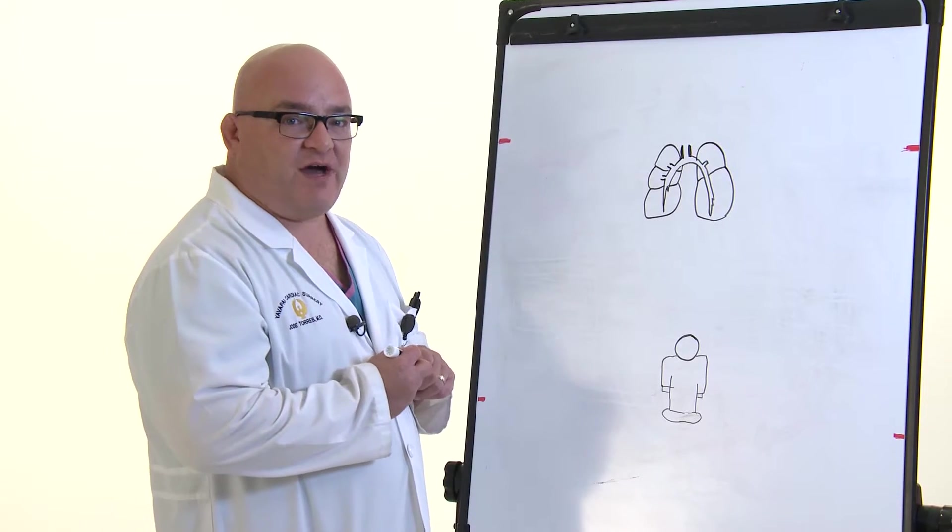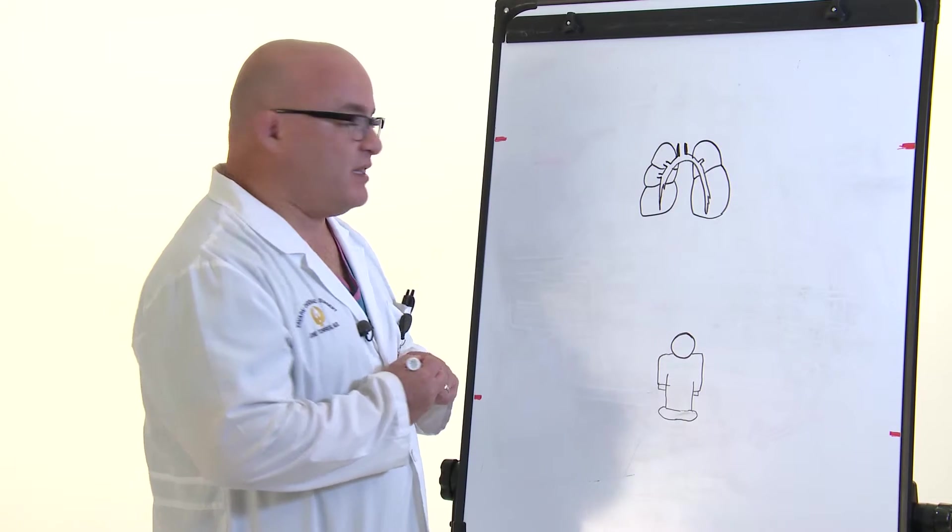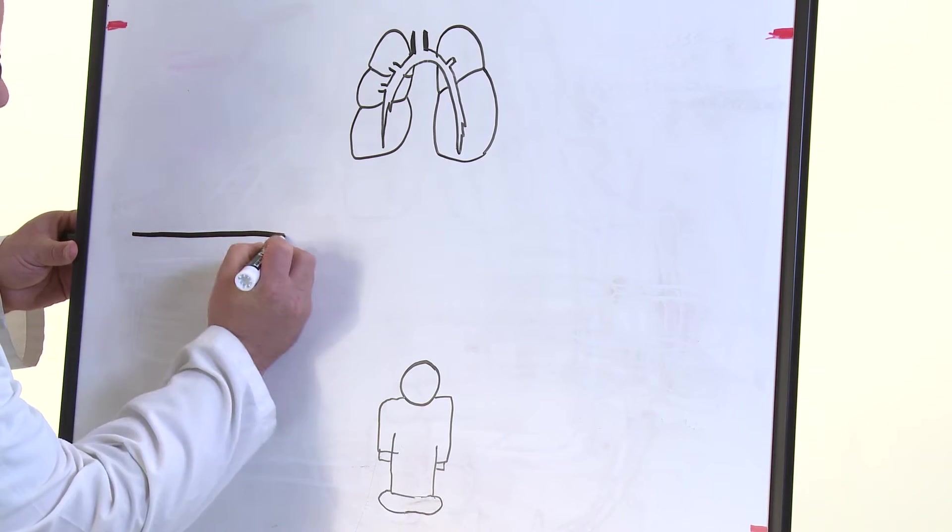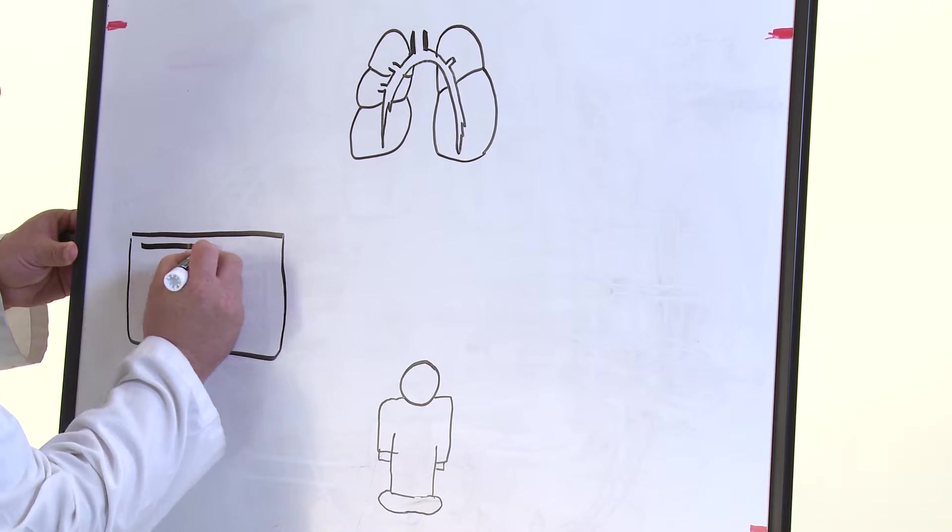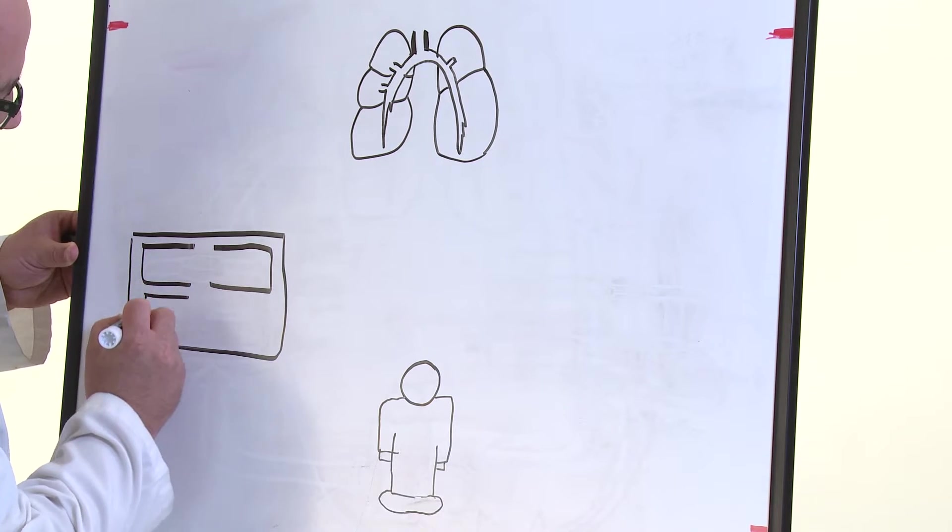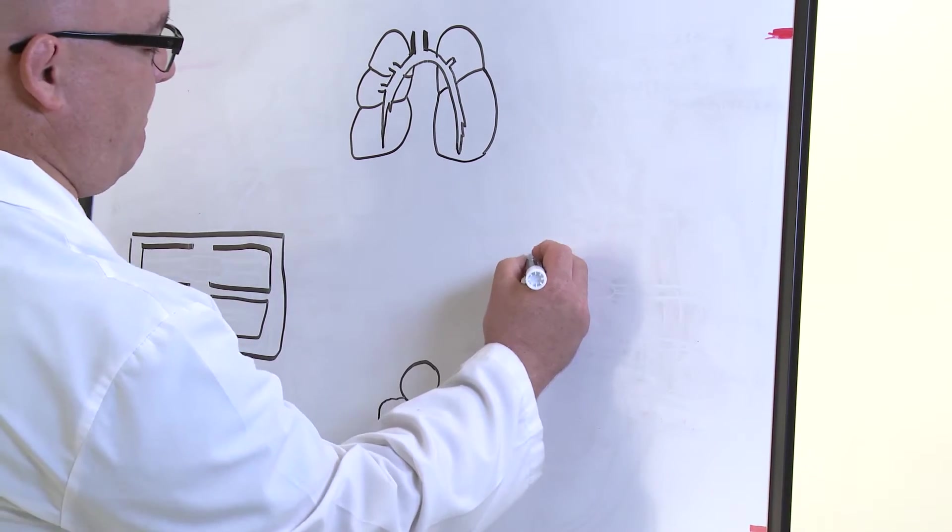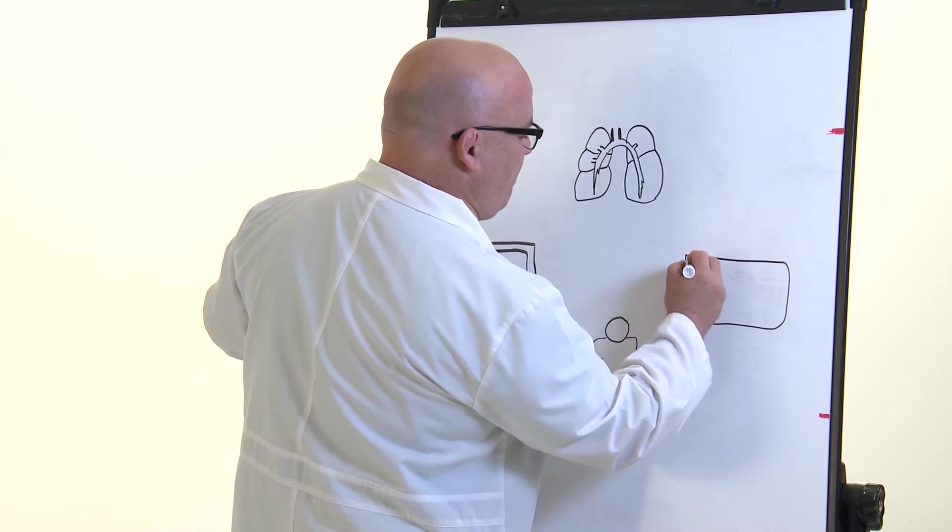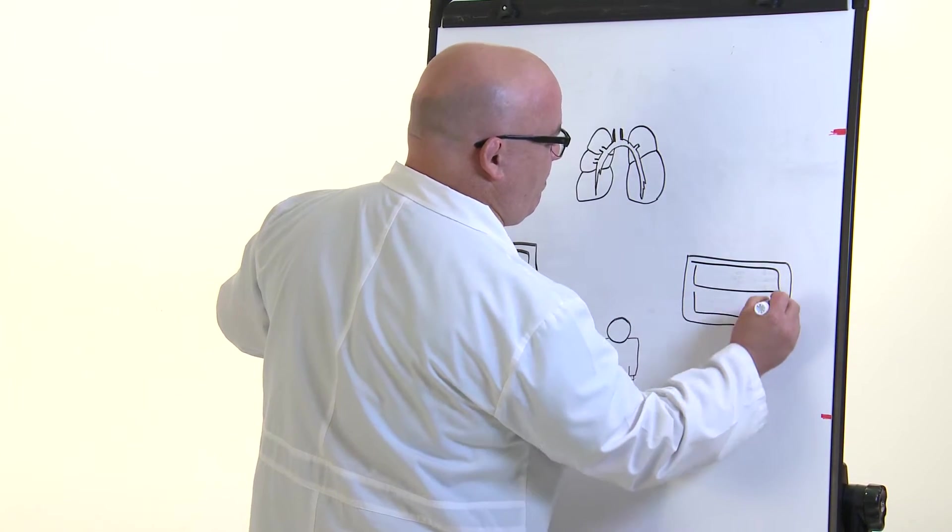The heart is divided into a right side and a left side. The right side and the left side are also divided into two chambers each, and these chambers are all divided by valves. Two major valves on the right side, two major valves on the left side.